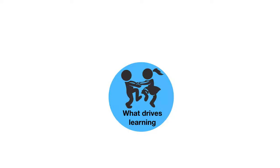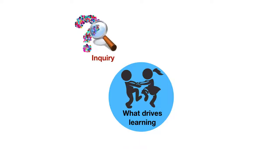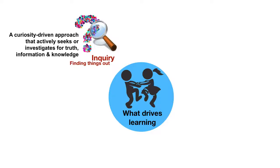EDT 180 is set up around four key impulses for learning described by John Dewey. The first impulse he talks about is what he calls inquiry, which is essentially nothing more than finding things out. It is a curiosity-driven approach where questions emerge from the learner's curiosity and they actively seek or investigate for truth, information, and knowledge.